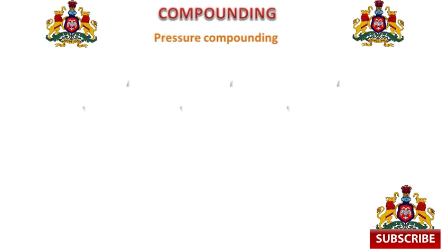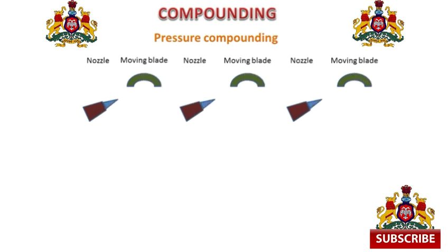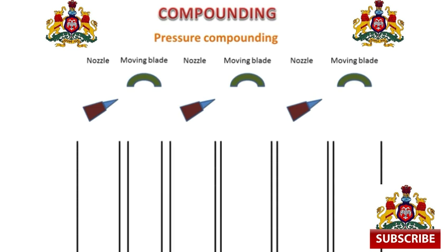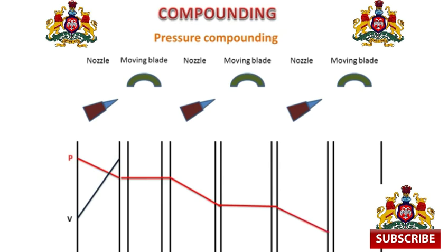In pressure compounding, the arrangement is: firstly a nozzle, then a moving blade, then nozzle and moving blade, and nozzle and moving blade. For the pressure graph: in the nozzle, velocity increases and pressure decreases. On the moving blade, pressure is almost constant. Then in the next nozzle it further decreases, on the moving blade it is constant, and in the nozzle it decreases, and on the moving blade it is almost constant.